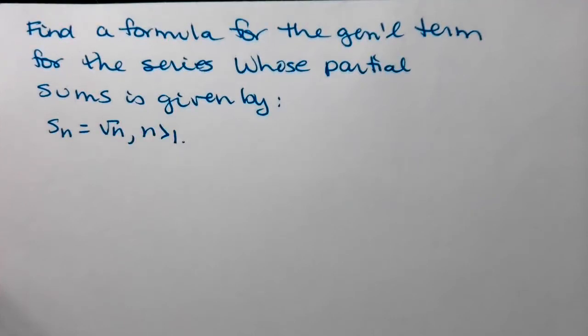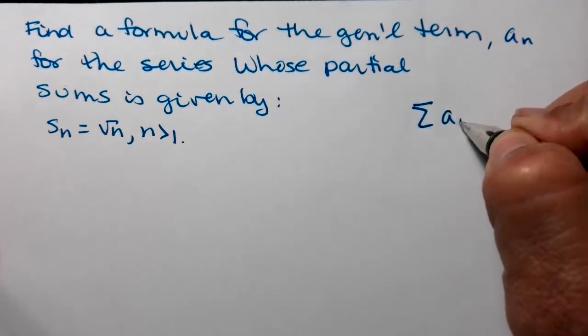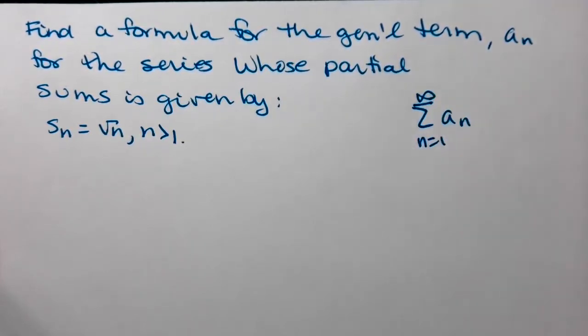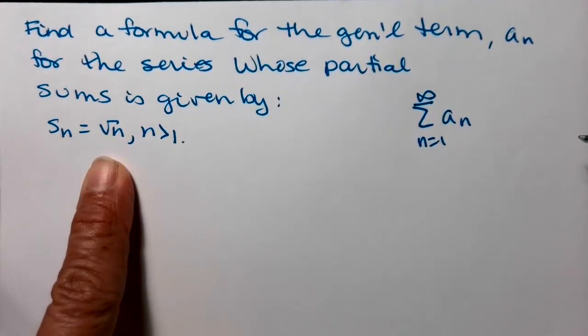What I love about this question is that it's looking at the relationship between the terms of your series and the partial sums, and kind of going in a way that you don't usually go. In this case, we are given the formula to calculate all of the different partial sums, but we have to come up with that general term of the series, a sub n. So we're going to be looking for those a sub n's so that if we're adding from 1 to infinity, the partial sums can be computed as the square root of n.